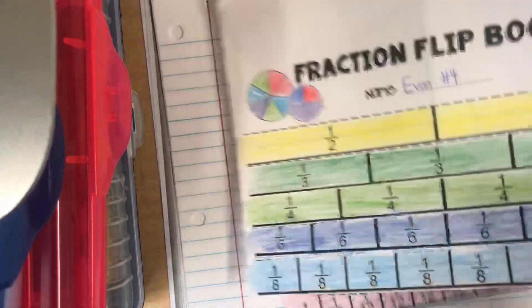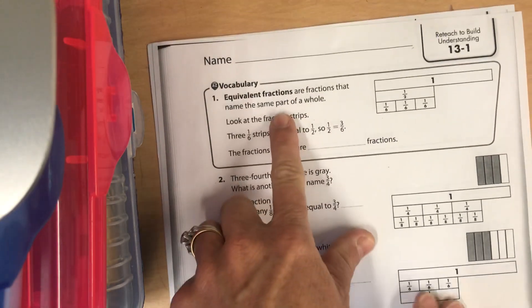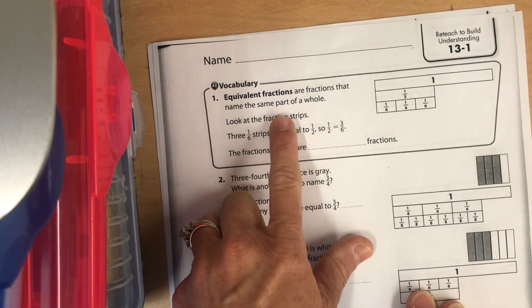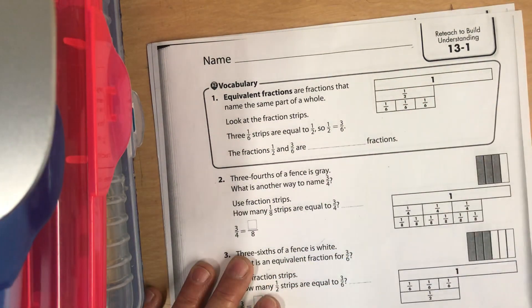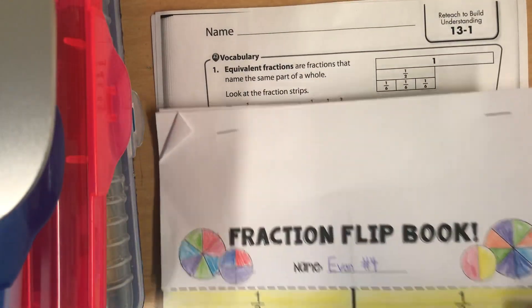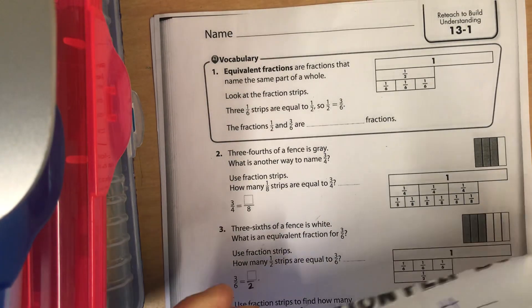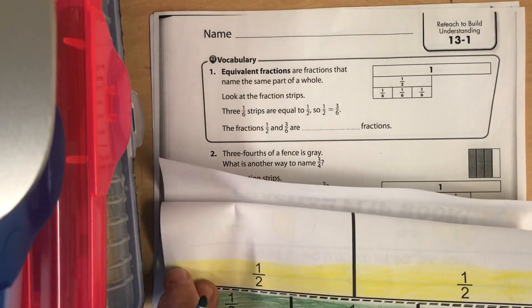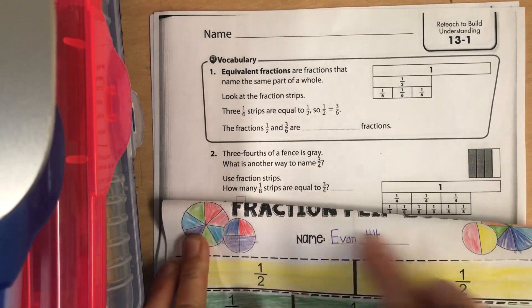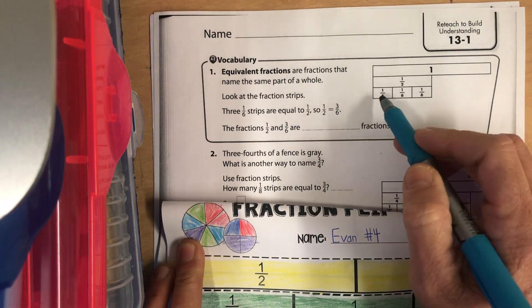Equivalent fractions are fractions that name the same part of a whole. Look at the fraction strips — this is the same as what we have with our fraction book. One whole would be all the way across. This is half of it, and we want to know how many 1 sixths we can fit inside of that half.